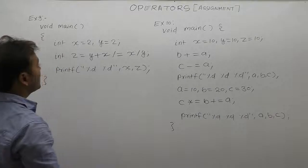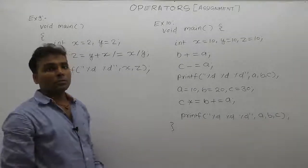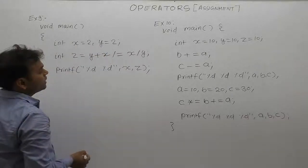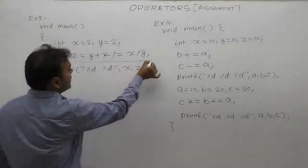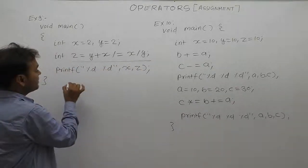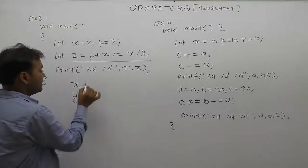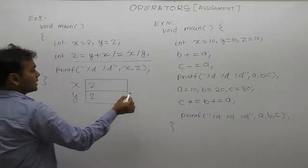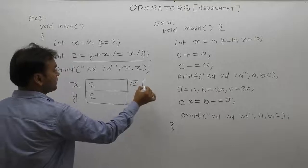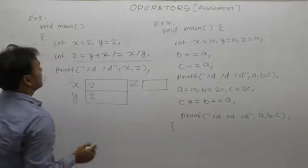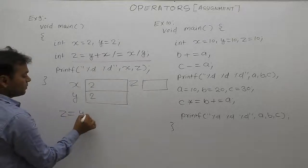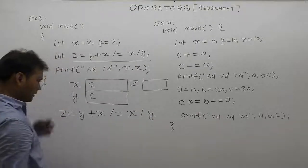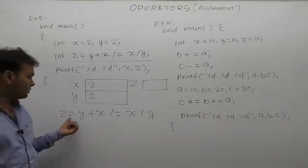Now the next example regarding assignment operators. In this case, concentrate on Example 9. Here we are using two variables x and y with initial value 2 and 2. One more extra variable z is there. The expression is: z equals to y plus x, divided by y. This expression uses a total of four operators using assignment.